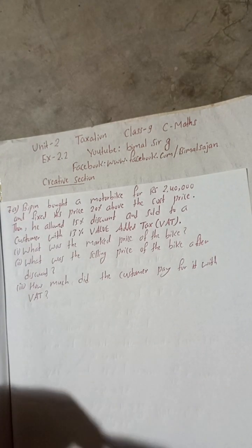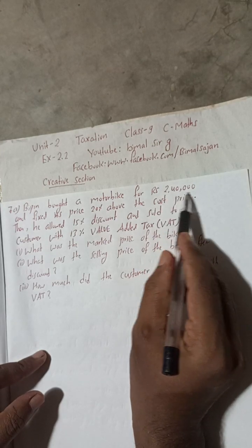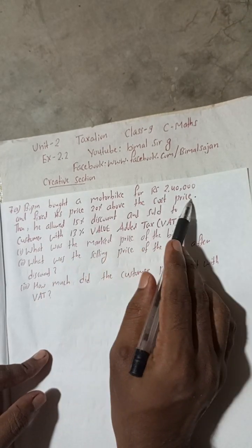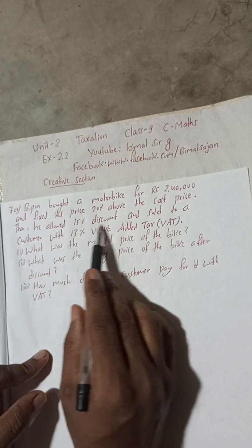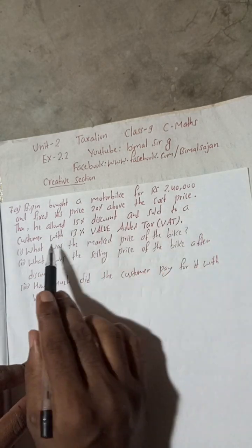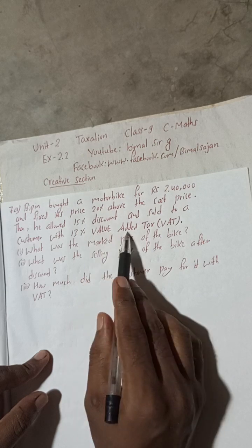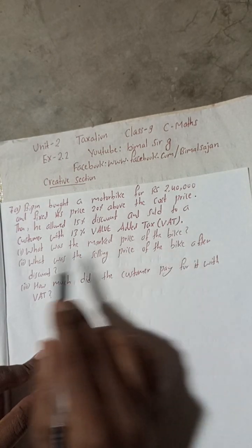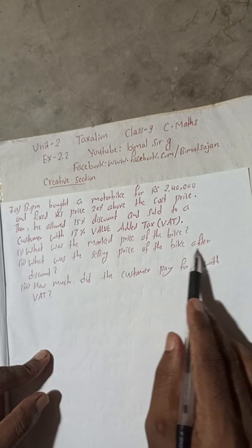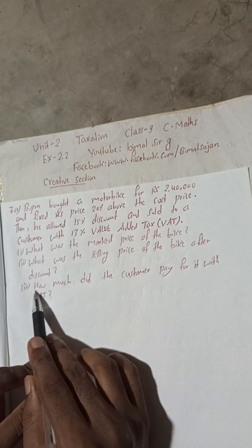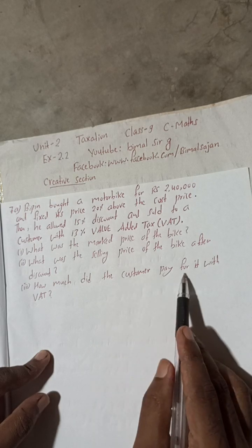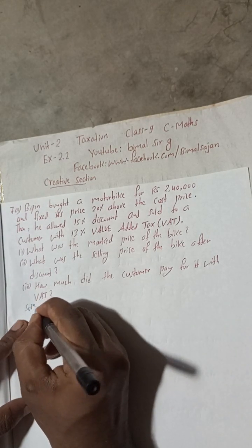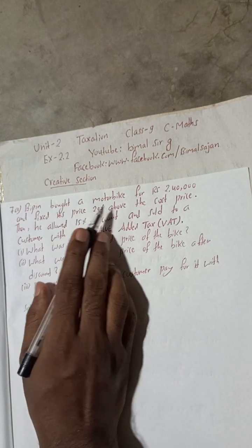Question 7A: Bpin bought a motorbike for Rs 2,40,000 and fixed its price 20 percent above the cost price. He then allowed 15 percent discount and sold to a customer with 13 percent value added tax. What was: (1) the marked price of the bike, (2) the selling price of the bike after discount, and (3) how much did the customer pay for it with VAT? Let's begin the solution.